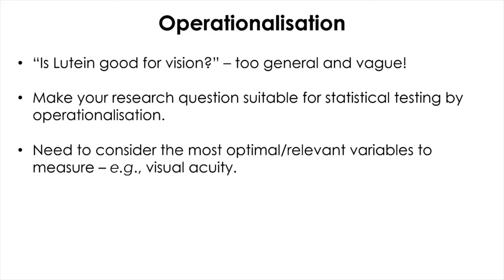You need to make your research question more specific and suitable for statistical testing by operationalizing the relevant variables you want to measure. Operationalization can be defined as a process of detailing your research question further to practically testable or measurable specifications. This process enables abstract or general ideas or concepts to become empirically observable or measurable by bridging them with relevant measurements that are thought to represent those ideas or concepts.